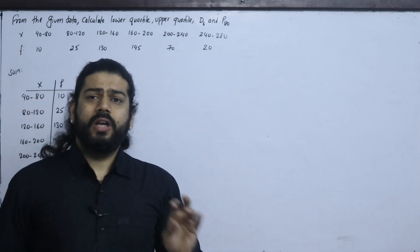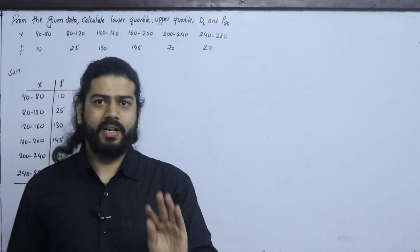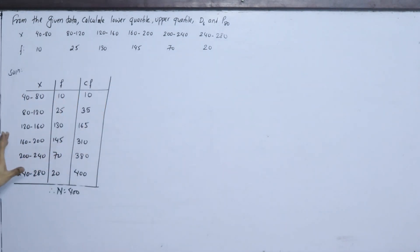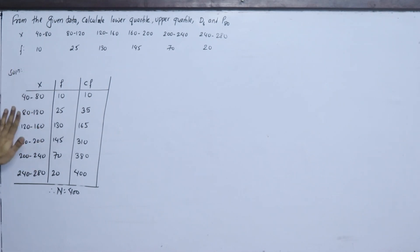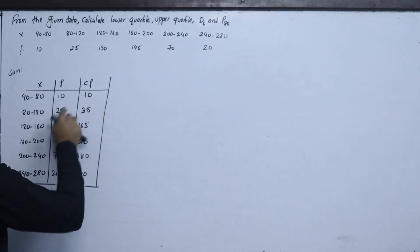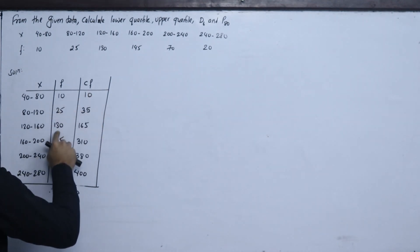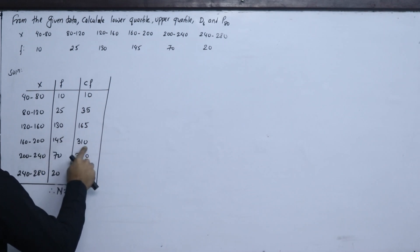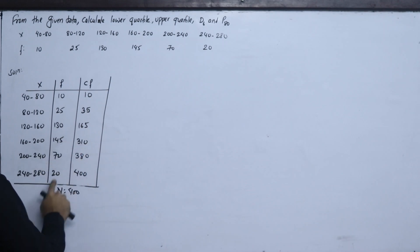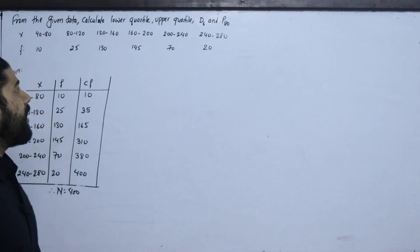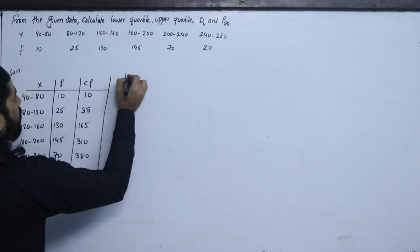We first build the cumulative frequency table. CF: 10; 10+25=35; 35+130=165; 165+145=310; 310+70=380; 380+20=400. So N=400.